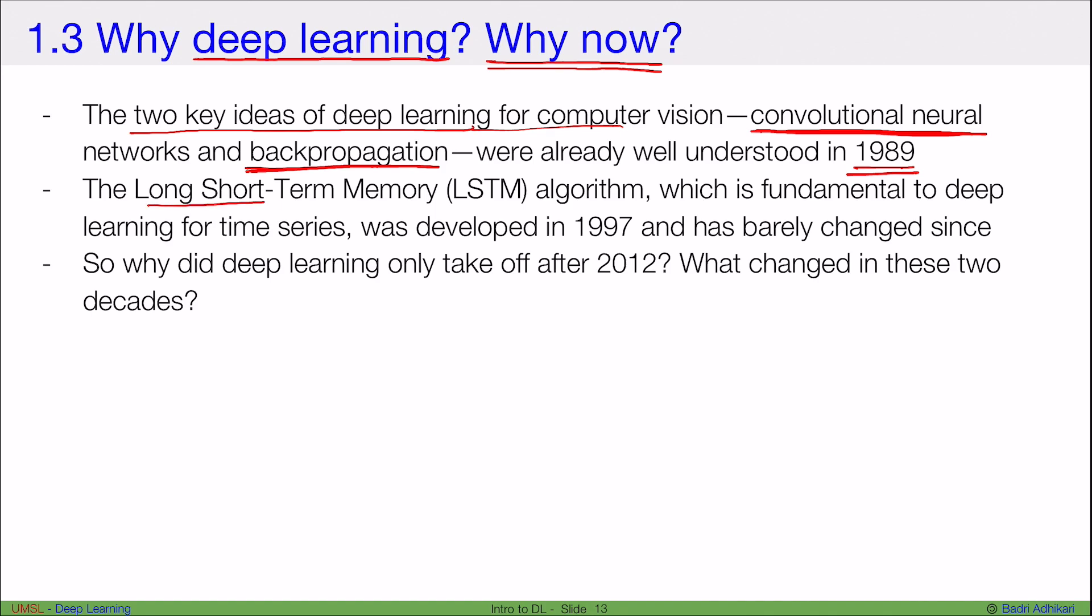So why didn't deep learning become popular then or why couldn't we do deep learning at that time? Also, the long short term memory algorithm, LSTMs, which is fundamental to deep learning for time series data, was already developed in 1997, and it has barely changed since then. So why did deep learning only take off after 2012? What changed in these two decades that it wasn't popular then and only now?